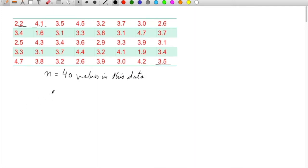If we have to find out the mean value, mean which is represented by x bar, if they were considered as x1 to xn, so the sum is 2.2 plus 4.1 plus 3.5 plus 4.5 plus 3.2 and so on.